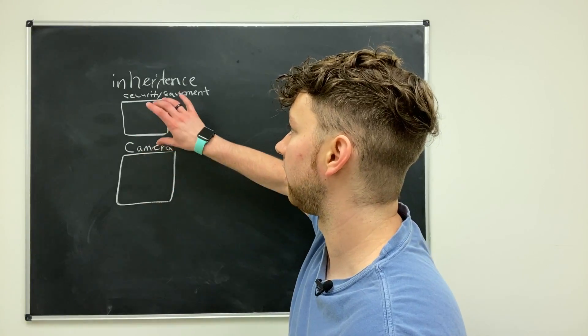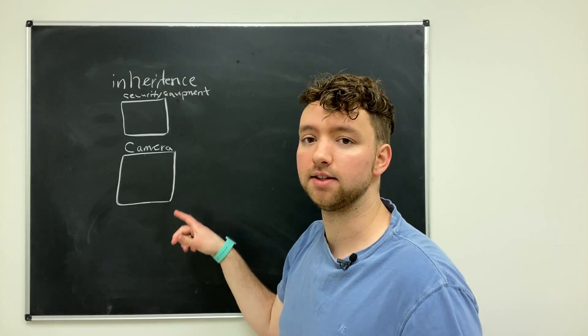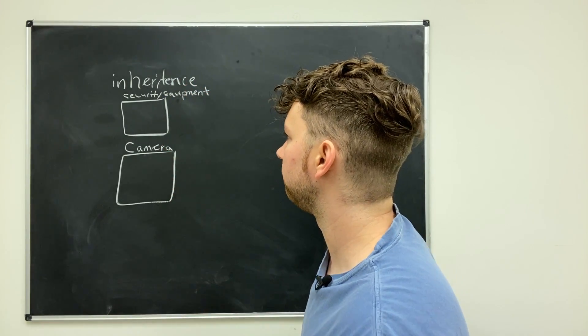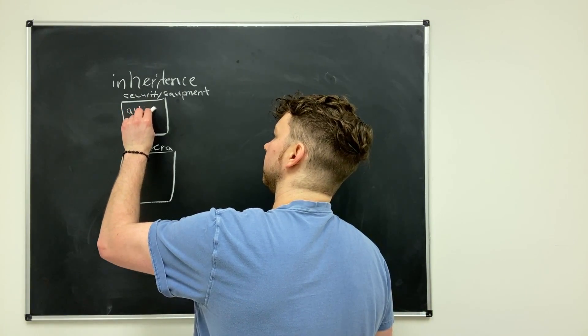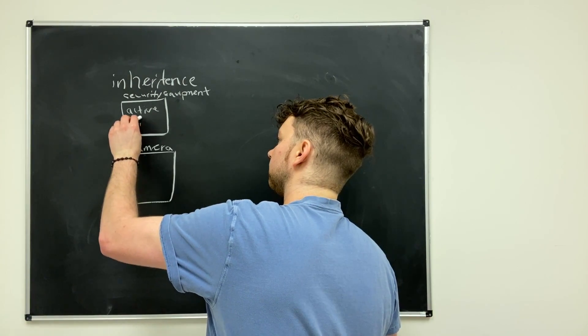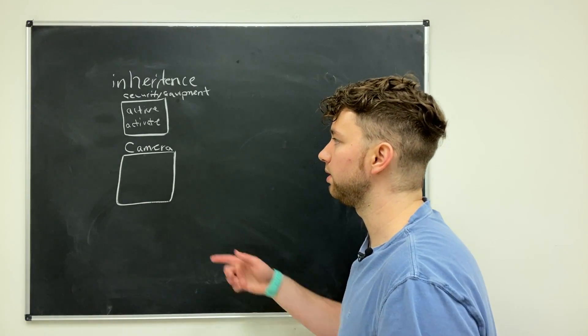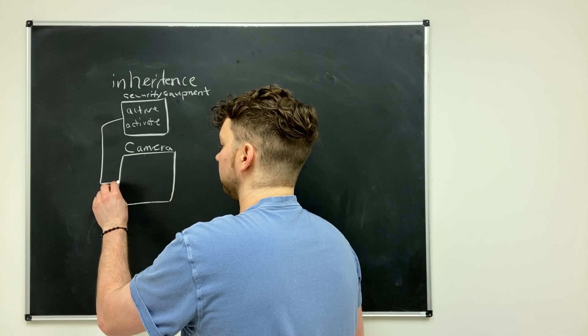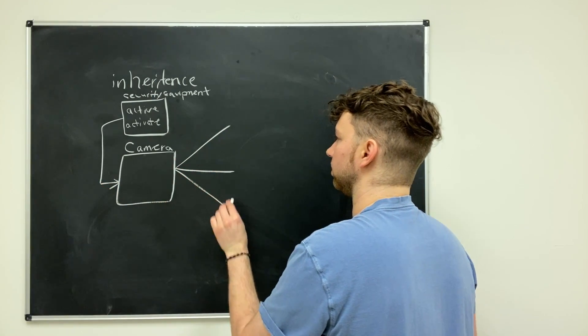We can define things in the security equipment class that will automatically exist inside any camera objects we create. So for example, we might put an attribute active in here or we might put a method in here such as activate. And then if we define security equipment as the base class for camera, then anytime we instantiate a camera, those things are going to exist.